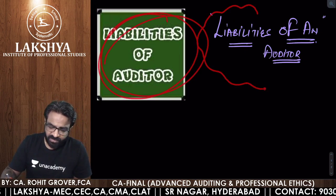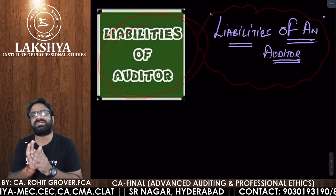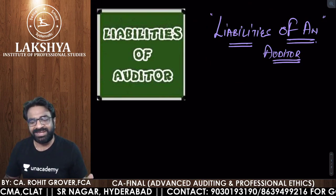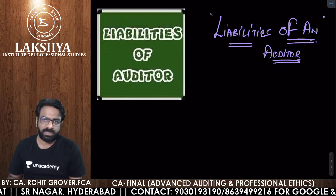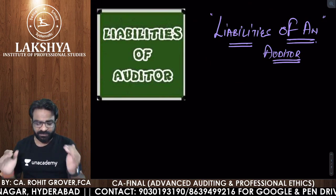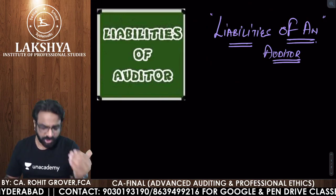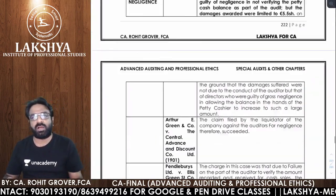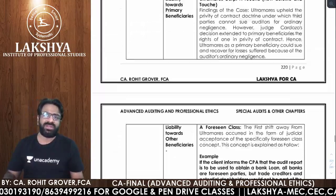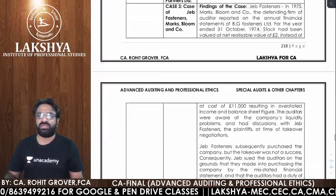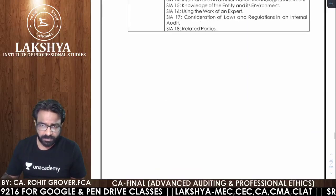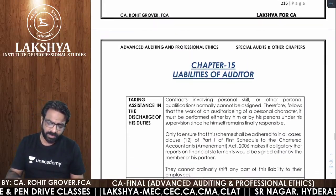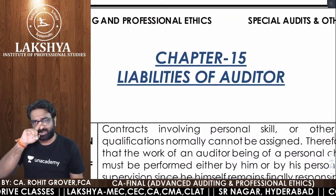What kind of liabilities of an auditor are we going to understand in this particular chapter? There are approximately 7 to 8 different types of liabilities. First of all, let me show you the material provided. In your module number 3, on page number 217, you will find this chapter called Liabilities of an Auditor.